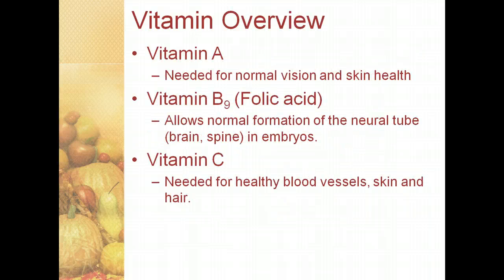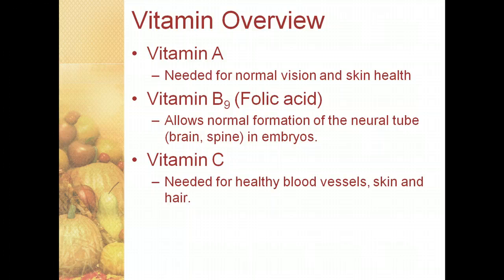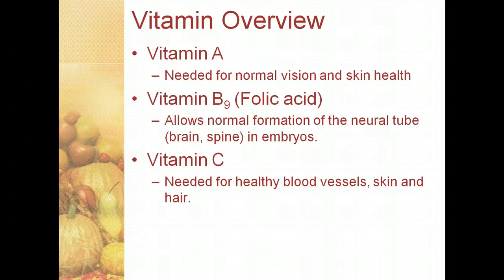Now we'll have an overview of the vitamins you need to recognize. Vitamin A is needed for normal vision and skin health — in fact, one of the leading causes of blindness in the developing world is the absence of vitamin A. Vitamin B9, also called folic acid, is important because it allows the normal formation of the neural tube, which turns into the brain and spine of embryos.